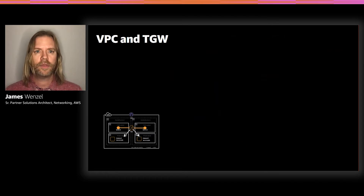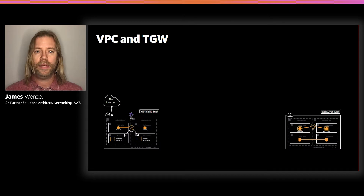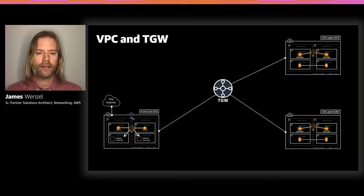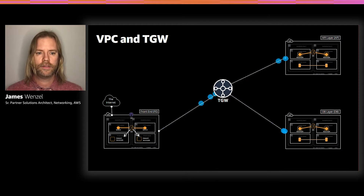Transit Gateway is something that we released a while ago. If we have our internet coming into a front end, and we also have our DB layer and AP layer — because our application is larger than what would fit in a standard VPC — we'd want to connect them together, and Transit Gateway is a natural way of doing that. This will allow our packets to flow and information to carry as if everything was local on a local network that we built in our own data centers.